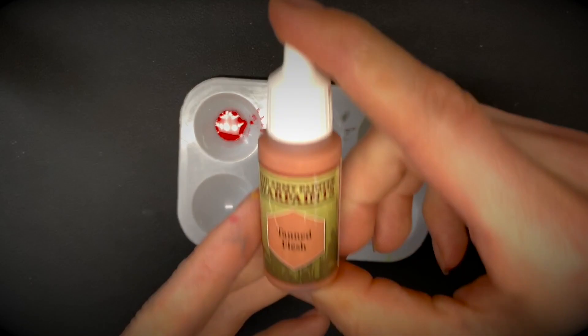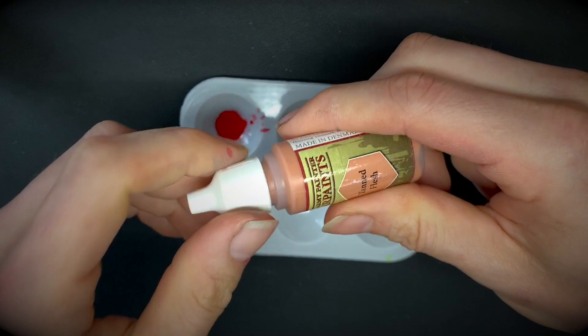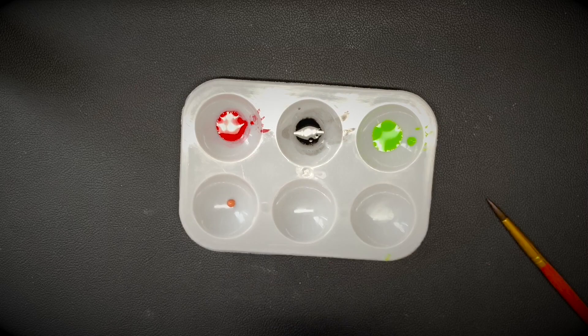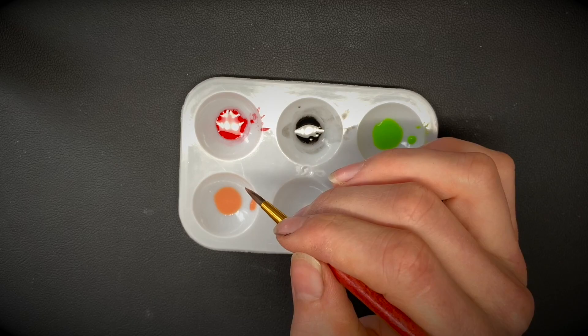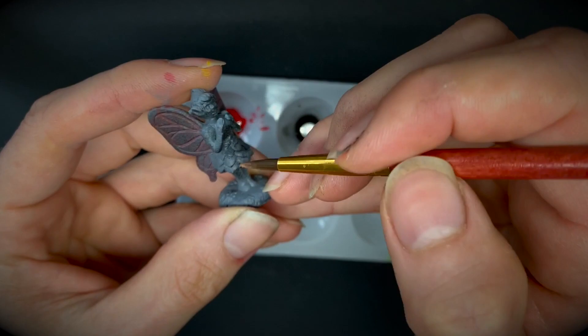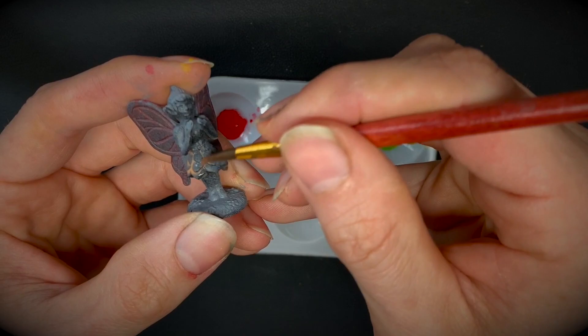And now we're on to some Army Painter War Paints. We're going to try out Tanned Flesh. I find Army Painter to be also a thinner paint, so we'll go with the seven drops this time. Mix it up and start applying it to our model. We'll hit up the little flower dress here on the pixie. It was dropping quite nicely in those recesses - seven drops was the way to go on this one.